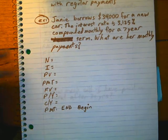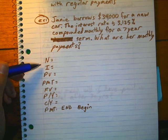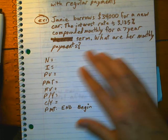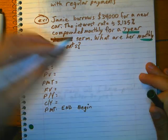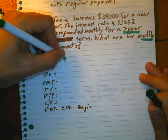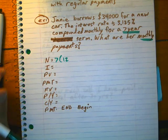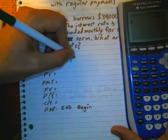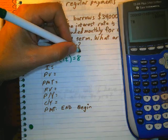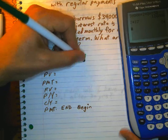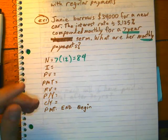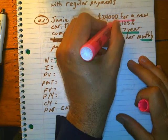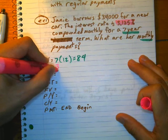So N is the number of terms being done. It's happening for seven years and monthly, so we're going to have 7 times 12, and 7 times 12 is going to give us 84. Now, our interest is 3.125.